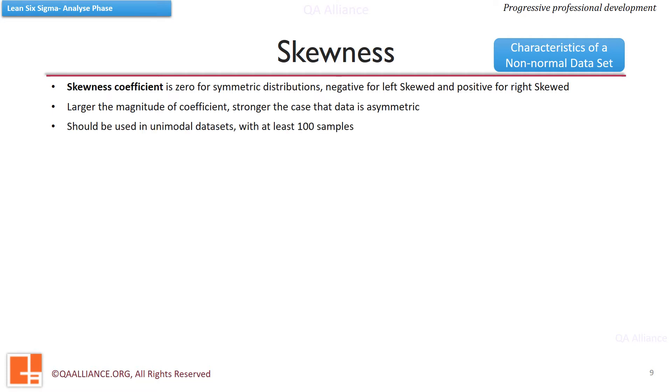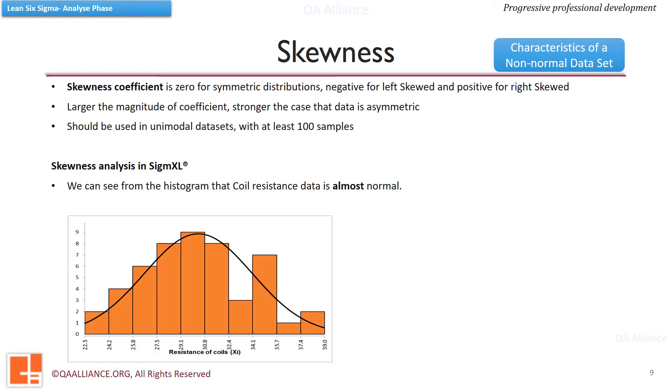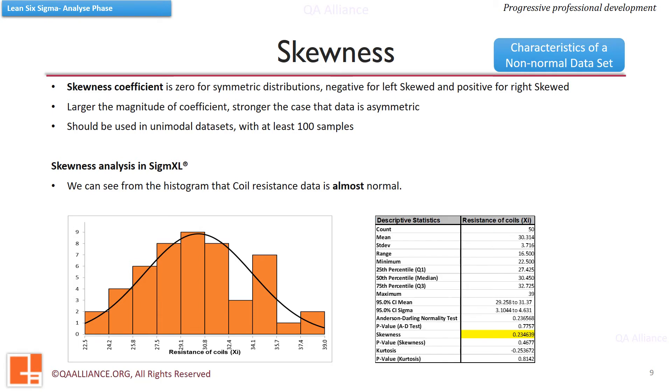The ideal scenario to analyze skewness is that it should be used in unimodal datasets with at least 100 samples. This analysis can also be done in Excel itself with the help of data analysis tool pack. In Sigma Excel, we can create a histogram and see if the distribution is skewed on any side. Here this histogram is almost normal. If we see the descriptive statistics summary, the skewness coefficient is near zero, data is slightly positively skewed. Positively skewed means the distribution is skewed to the right.